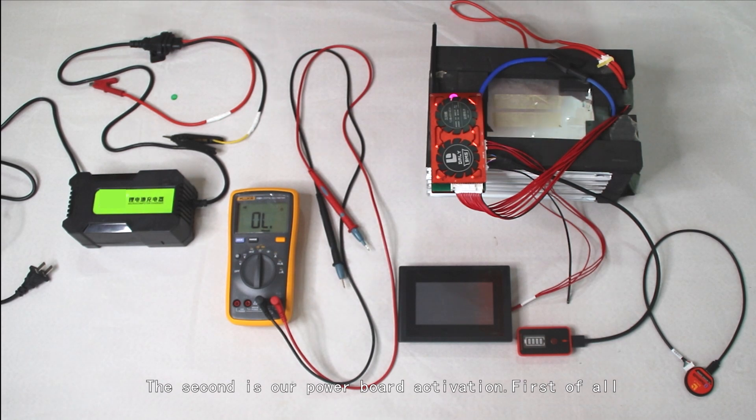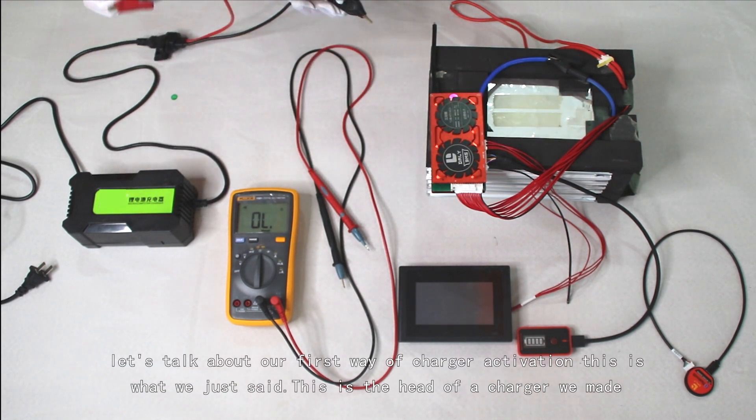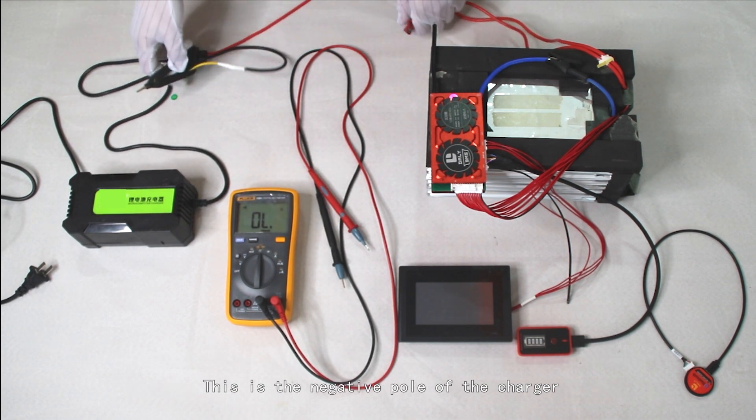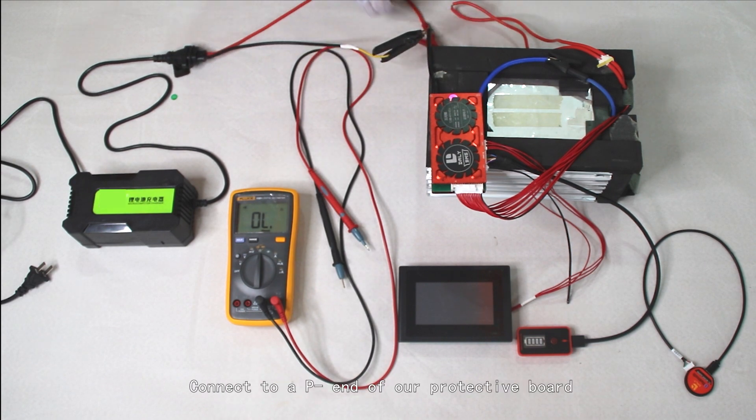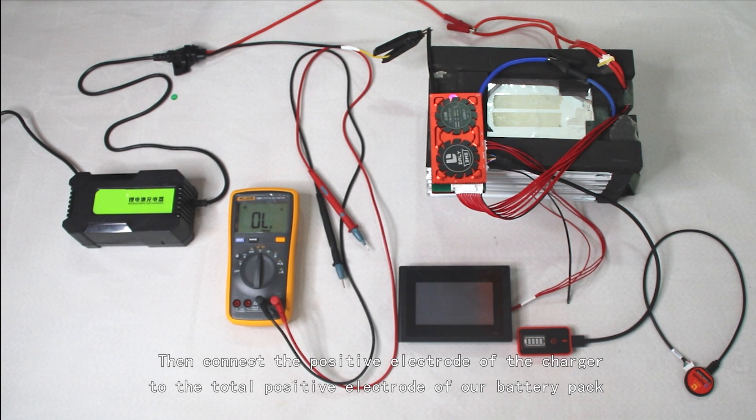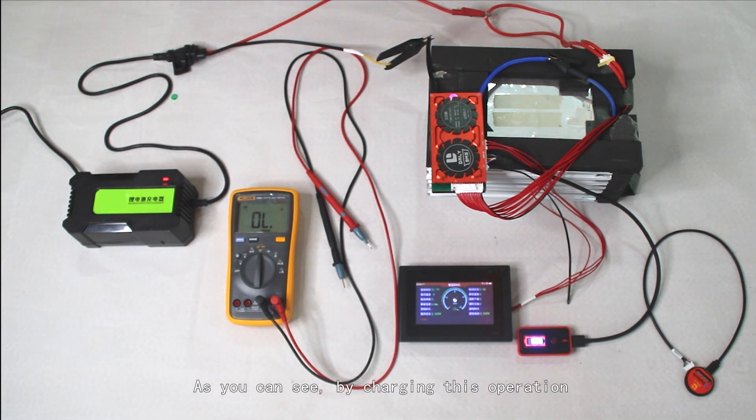First, let's talk about charger activation. This is the head of a charger we made - this is the negative pole. We connect the negative pole of the charger to the P negative end of our protective board, then connect the positive electrode of the charger to the total positive electrode of our battery pack. At this time we plug in the charger.